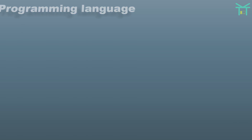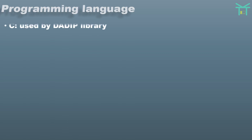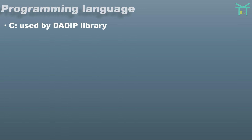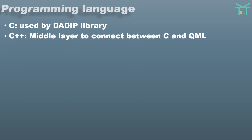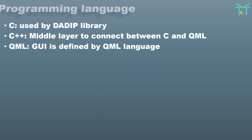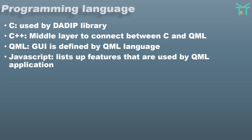The programming languages used are: C, which is used by the DADIP library; C++, which serves as a middle layer to connect between C and QML; QML, where the GUI is defined; and JavaScript, which provides the list of features used by the QML application.